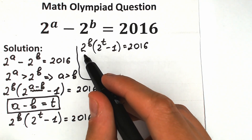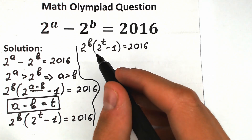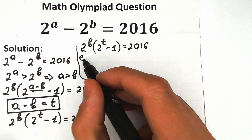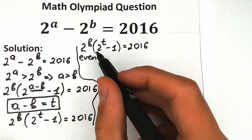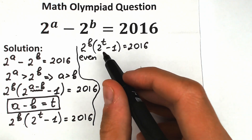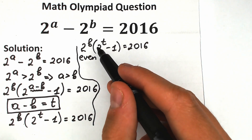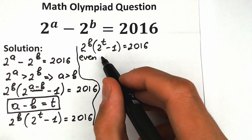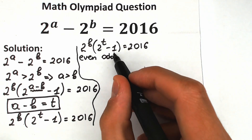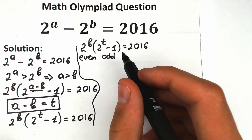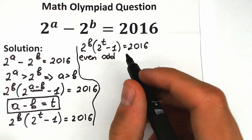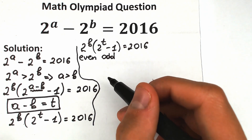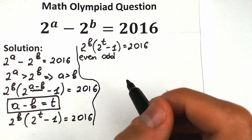Take a close look: 2 to the power B is an even number, because no matter how many times you multiply 2 by itself the result is always even. Inside the parentheses, 2 to the power T is also even, but subtracting 1 makes it an odd number. This is a very important moment. So we need to express 2016 as a product of an even number and an odd number.